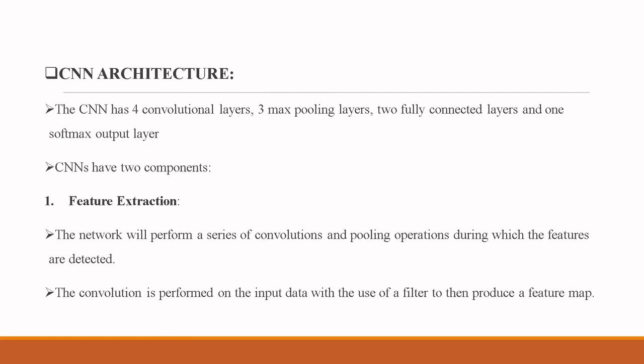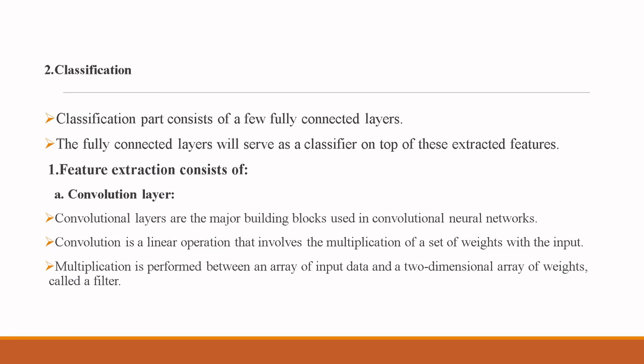The CNN architecture has four convolution layers, three max pooling layers, two fully connected layers, and one softmax output layer. CNN has two main components: feature extraction and classification. During feature extraction, the network performs a series of convolutions and pooling operations during which visual features are detected — convolution is performed on the input data with a filter to produce a feature map. The classification part consists of fully connected layers that serve as a classifier on top of the extracted features.